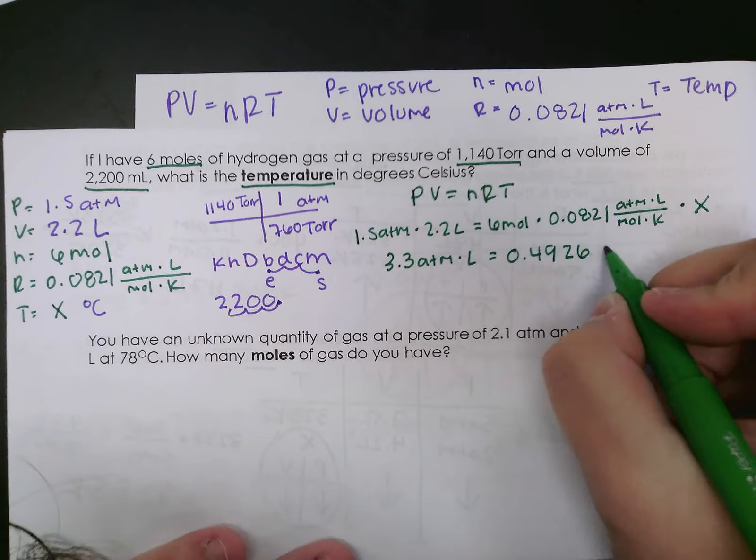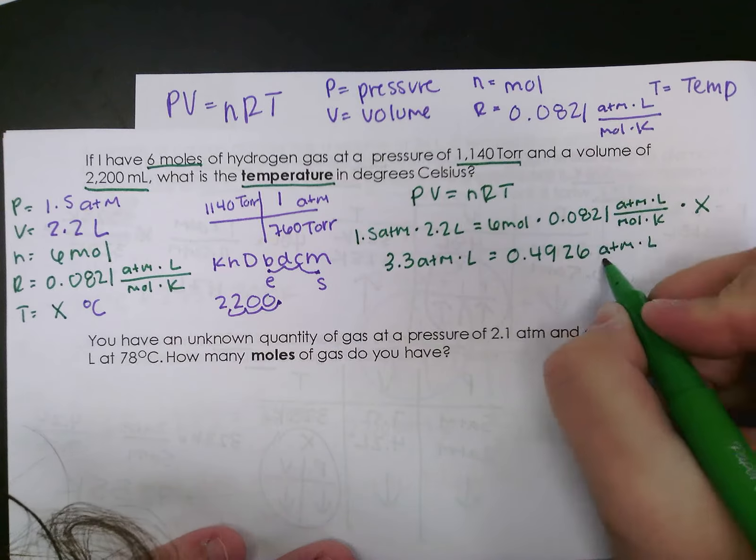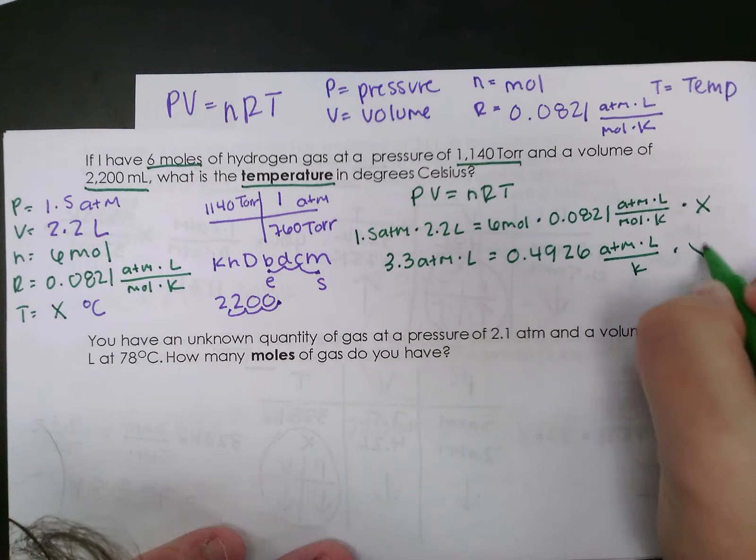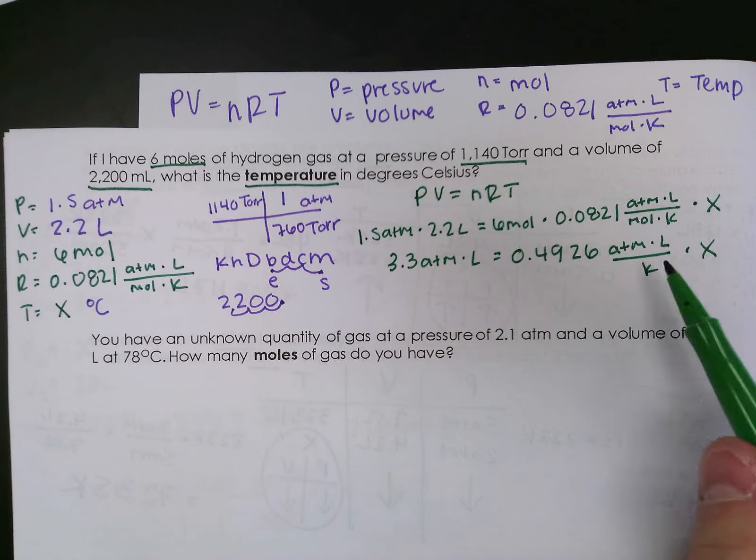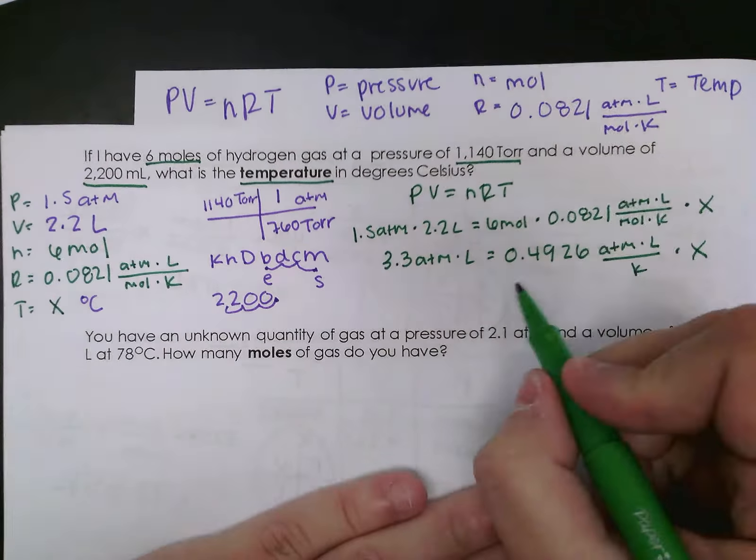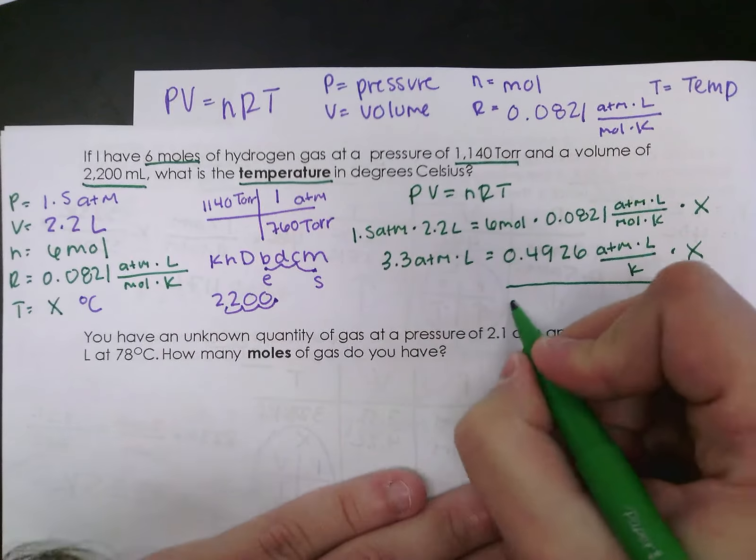Okay, those moles cancel each other out, times X. Now to get X by itself, I have to do the opposite. So if it's multiplication, the opposite of multiplication is division. So I need to divide both sides. What I do to one side, I have to do to the other.